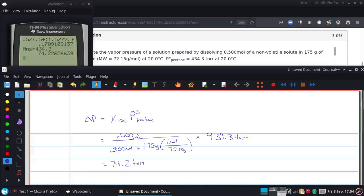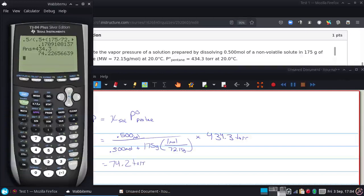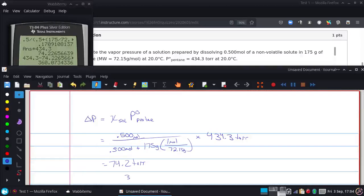That's the vapor pressure change, that's the delta, and we just got to remember vapor pressure goes down, so I'm going to take that 434.3 and subtract that number we just got, and get that the new vapor pressure is 360.1 torr.